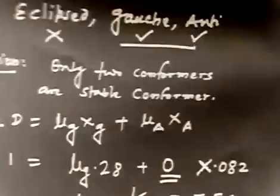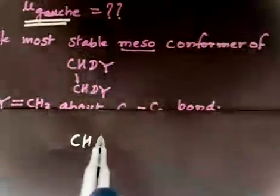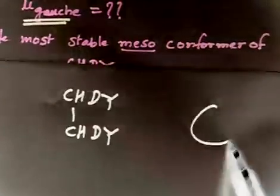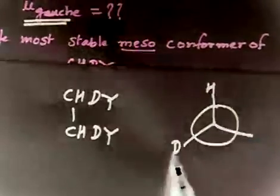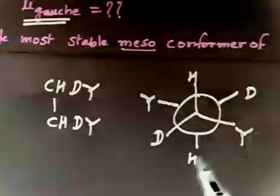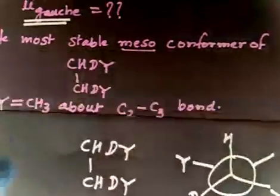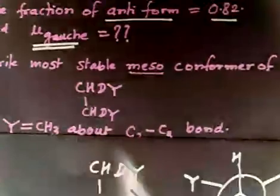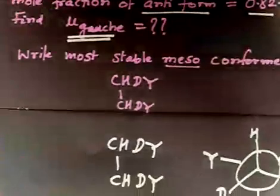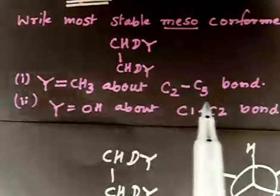Now for part B: write the most stable meso conformer of CHD·CHD·Y along the C2–C3 bond, where Y is CH3. So the compound is CH₃–CHD–CHD–CH₃. You have to write the most stable meso conformer along the C2–C3 bond, where C1 through C4 are numbered sequentially.